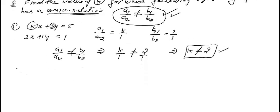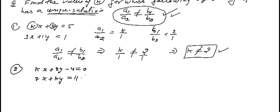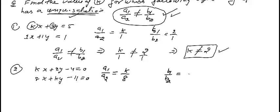Let us take another question of the same category. Find the value of K: the first equation is KX plus 2Y minus 4 equals 0, and the second equation is 8X plus KY equals 11. A1/A2 is equal to K over 8. B1/B2 is equal to 2 over K.